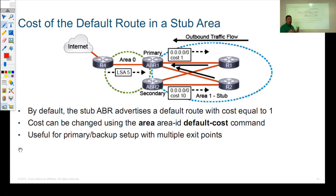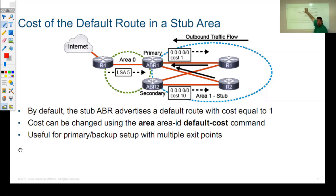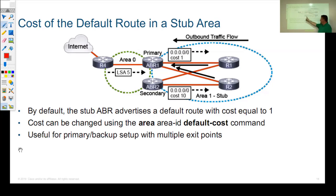When creating a stub or not-so-stubby area, the Area Border Router injects the default route. There can be issues when we have multiple ABRs. In that case, we want to use a primary ABR and only fail over to the secondary ABR if the primary fails. To accomplish this, we play with the cost of the default route being injected into the area. By default, the cost being sent in is equal to 1. On the secondary ABR, you can specify 'area 1 default-cost 30' or 40 — now routers in the area learn two different default routes, one with cost 1 and one with cost 40.